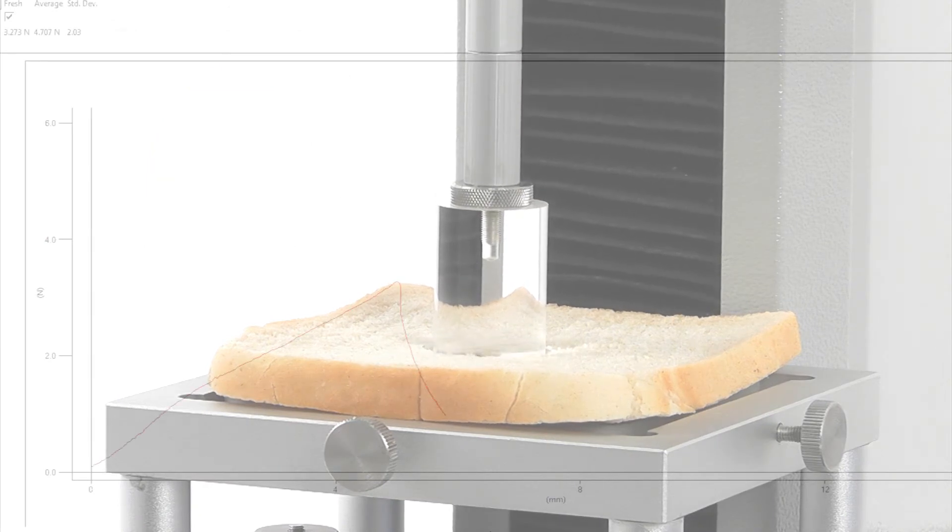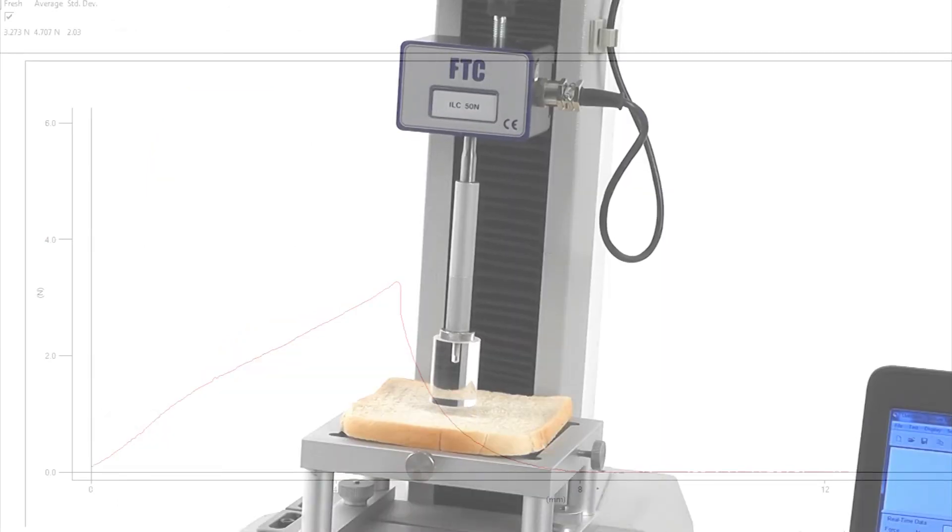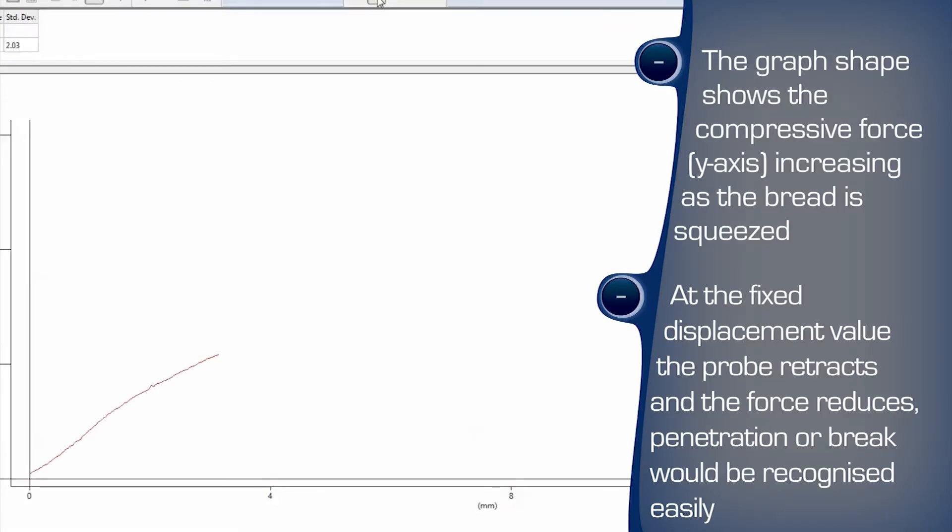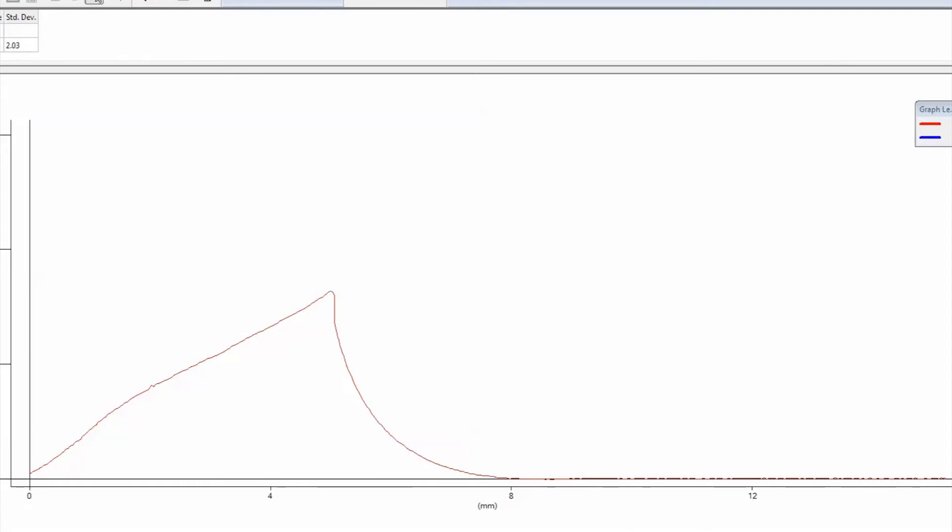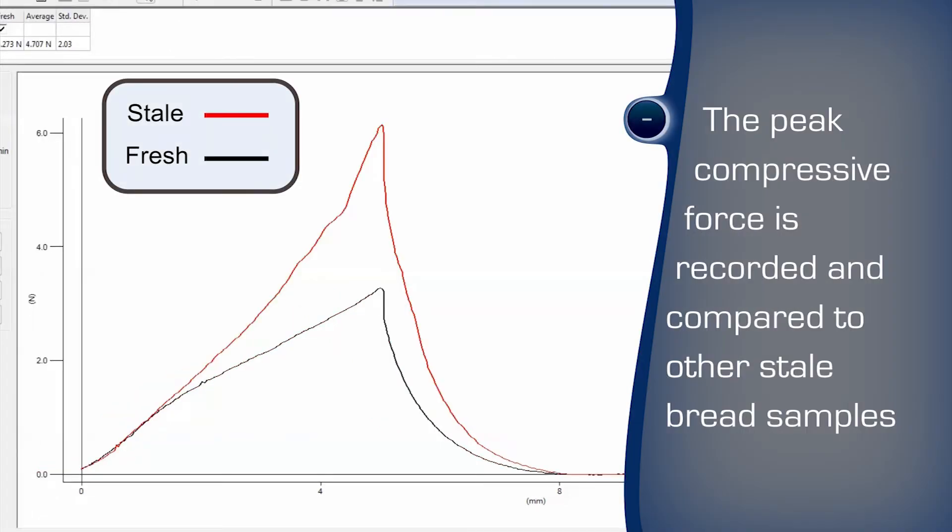The probe is retracted at the same speed to simulate a squeeze or bite. Real-time graphing clearly shows the behavior of the sample under test. Features of the curve can be identified which indicate ideal or undesirable sensory characteristics and the calculated values correlated to preferred quality benchmarks.